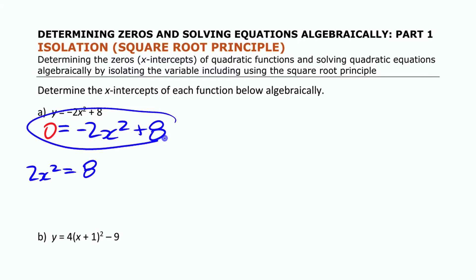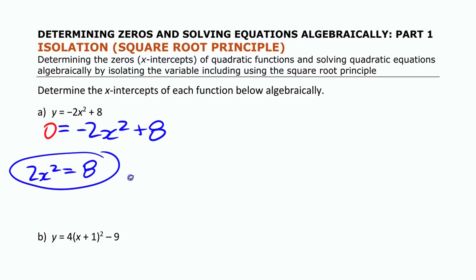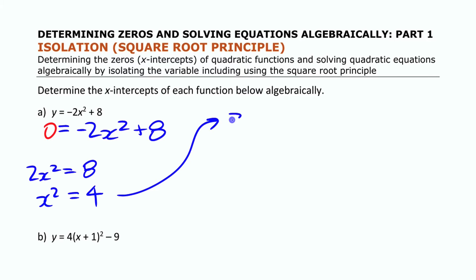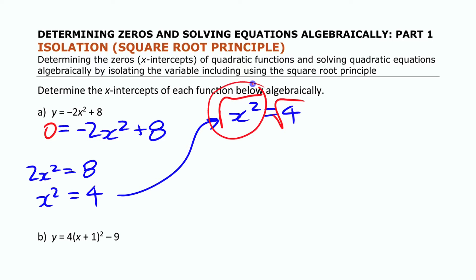The equation negative 2x² + 8 = 0 is equivalent to 2x² = 8, and that is the same as x² = 4 if I divide both sides by 2. So we have x² = 4. Now I can take the square root of both sides — the square root of x² is just x, since those are inverse operations.